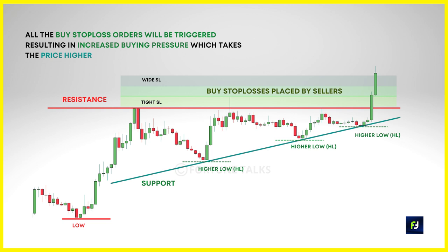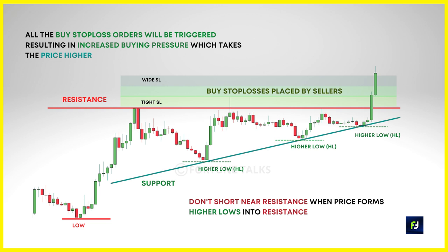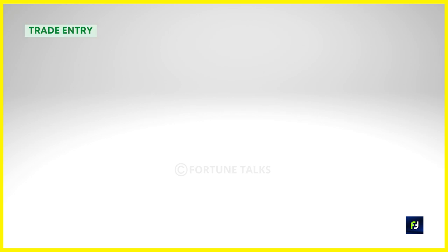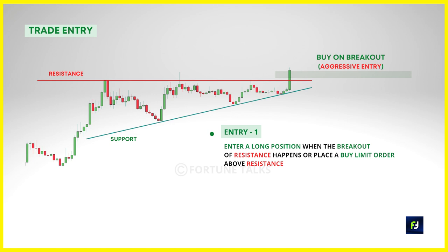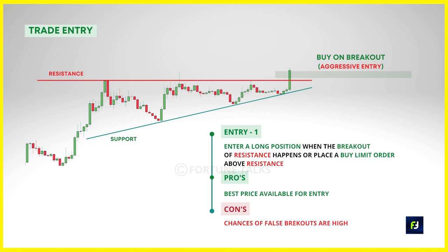When the market breaks out higher, all those buy stop loss orders trigger and fuel further price advances. Don't make the common mistake of going short just because price is at resistance — not every resistance is meant for shorting. When you see higher lows coming into the resistance, it's a sign of bullish strength and the market is likely to break out higher. For entry criteria, the first approach is to go long when price breaks above the highs of the ascending triangle or above the resistance level, by placing a limit buy order above resistance. This is one of the best prices to enter but risky due to potential false breakout.